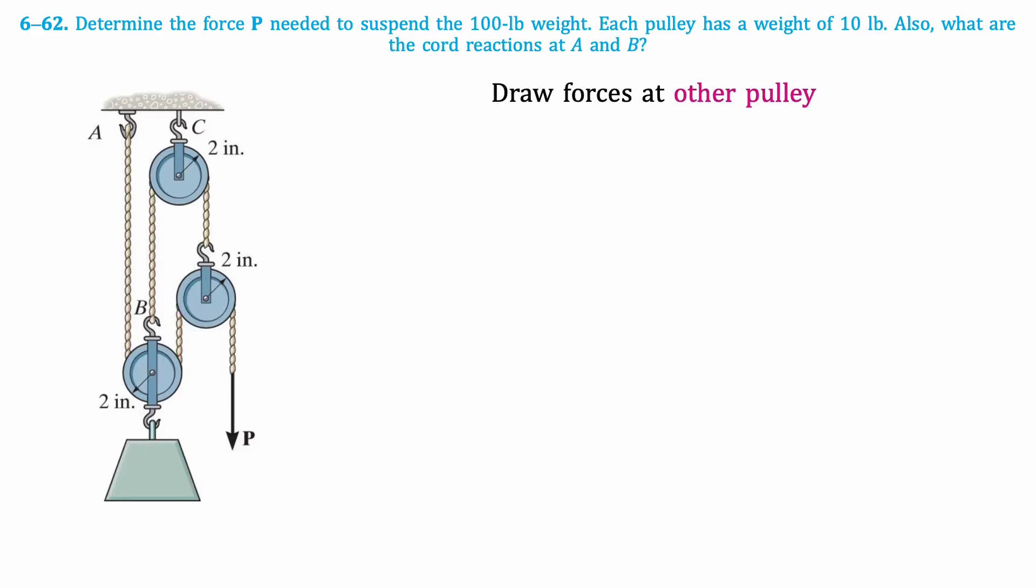Next, we'll draw the forces at the rightmost pulley. Then we'll write an equation for the sum of vertical forces. This results in 0 equals T minus 2P minus 10. This can be rearranged to create the following equation: 2P plus 10 equals T.